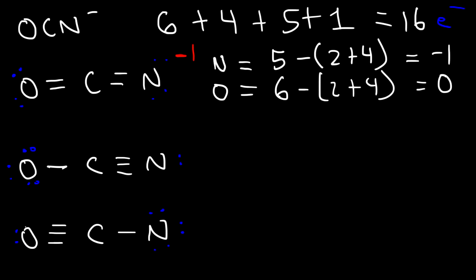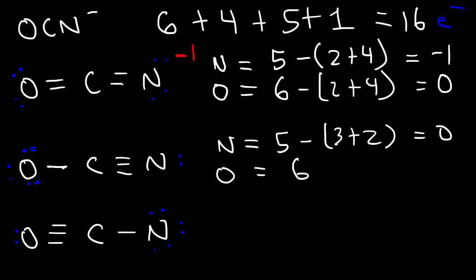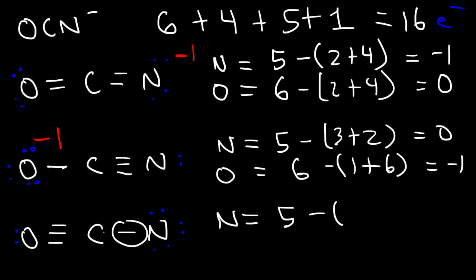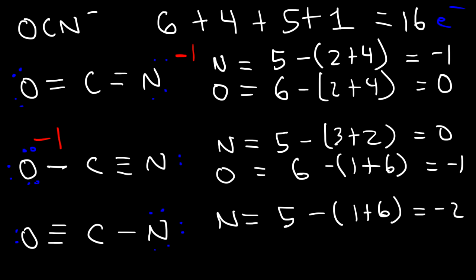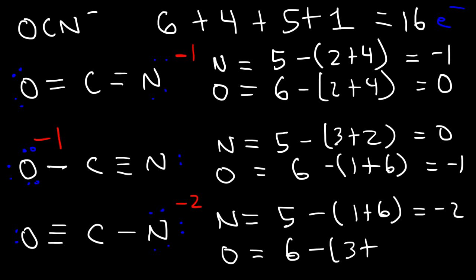For the second structure: nitrogen has five valence electrons, three bonds, and two dots — five minus five is zero. Oxygen has six valence electrons, one bond, and six dots — six minus seven is negative one. So oxygen bears the negative one charge. For the third structure: nitrogen has five valence electrons, one bond, and six dots — five minus seven gives negative two. Oxygen has six valence electrons, three bonds, and two dots — six minus five is positive one.